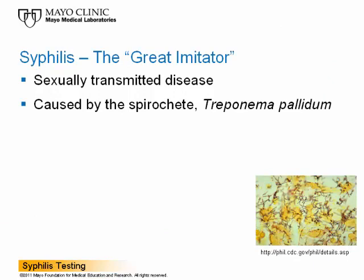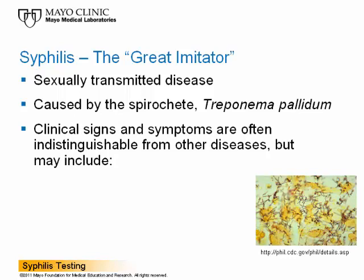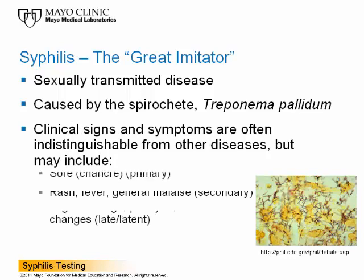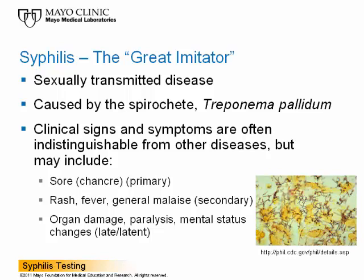Syphilis is a sexually transmitted disease caused by the spirochete bacterium Treponema pallidum. You can see the corkscrew-shaped, brown staining organisms in the image on the bottom right-hand side of your screen. Syphilis is oftentimes referred to as the great imitator, due to the fact that the clinical signs and symptoms are often indistinguishable from other diseases. During the primary stage, patients may present with a sore or chancre typically located at the site of infection. During the secondary stage, patients may show symptoms of rash, fever, and general malaise. If left untreated, the infection may result in organ damage, paralysis, or mental status changes in the late or latent phase.